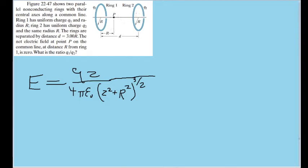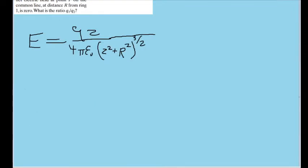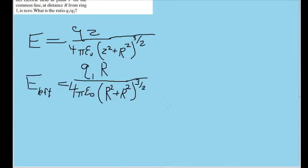Because as this diagram shows us, the distance between p and this ring is r, the exact same variable, the exact same length as the radius of the circle. So we can write the electric field due to the left ring a bit more simply here. And now I've written it this way, where I have substituted an r in for z.